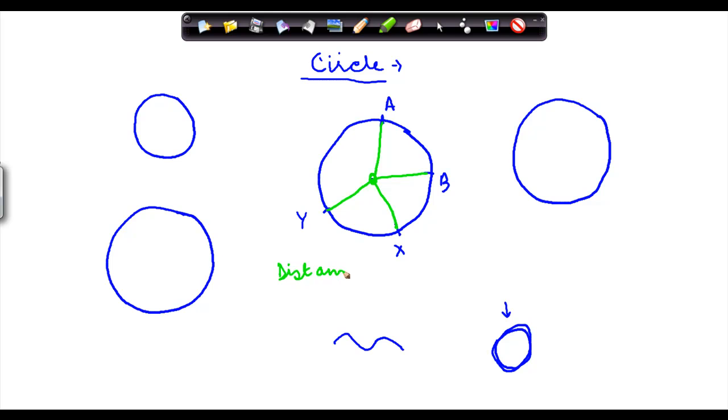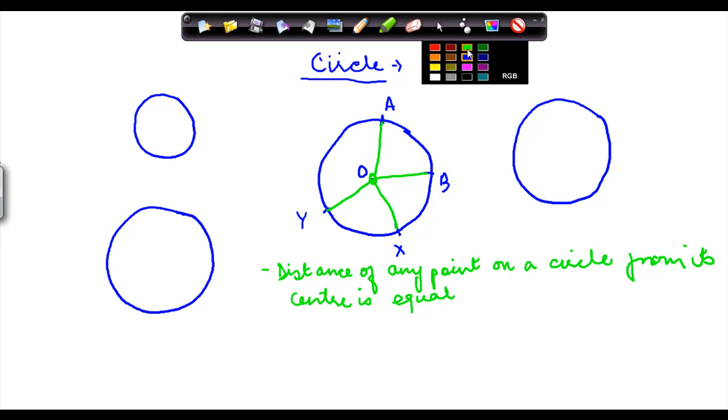So, distance of any point on a circle from its center is equal. What does this mean? This means that, suppose the center of the circle is represented by O. This would mean that OA, which is from here to here, would always be equal to OB, which is here to here, will always be equal to OX, will always be equal to OY. So, the distance of any point on the circle from the center is always equal and this is known as the radius.